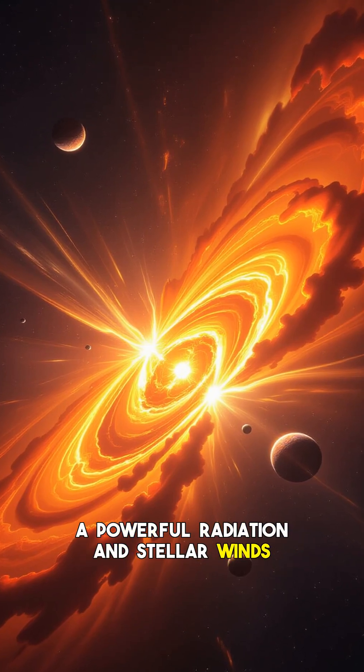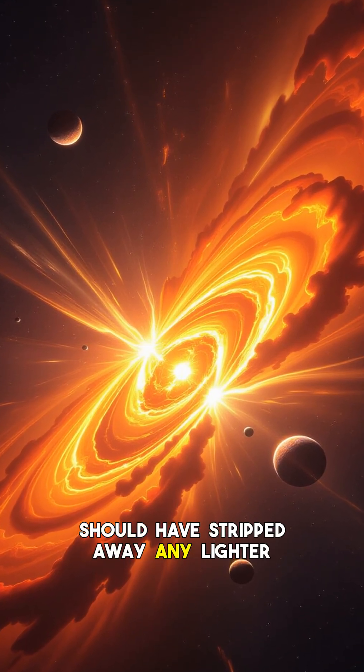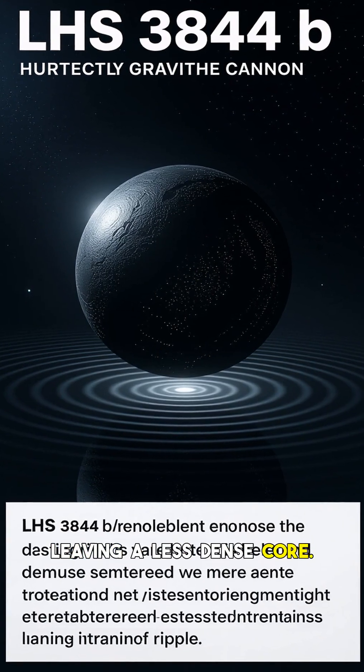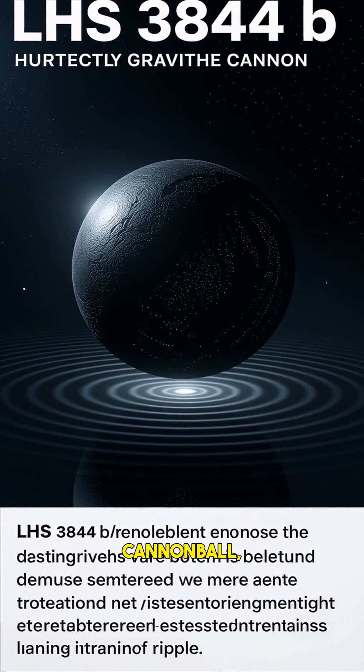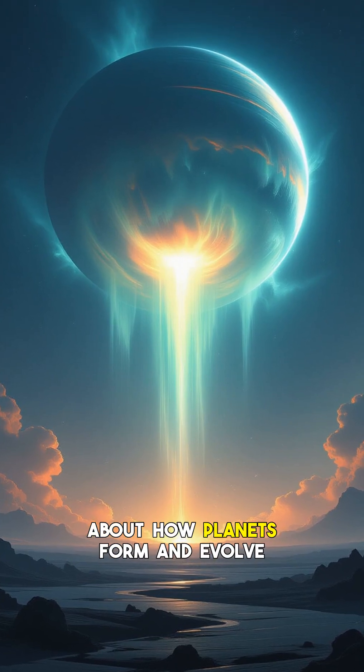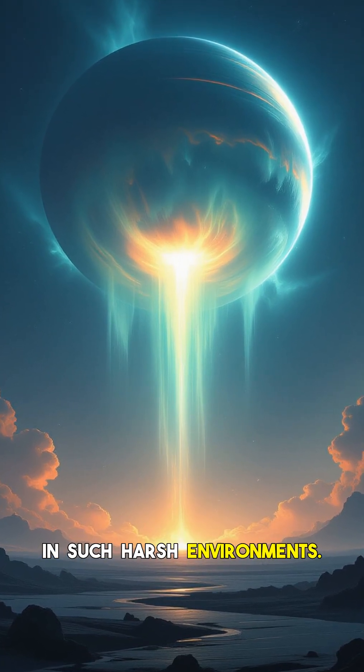The mystery deepens when we consider its proximity to the star. The powerful radiation and stellar winds from the red dwarf should have stripped away any lighter elements during its formation or early life, leaving a less dense core. But instead, we have a cosmic cannonball, a dense enigma that challenges everything we thought we knew about how planets form and evolve in such harsh environments.